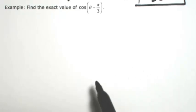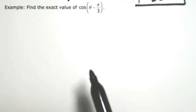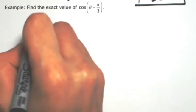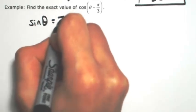Find the exact value of cosine of theta minus pi over 3. I'm going to give you some information about theta. We're told that the sine of theta is 7 over 10.